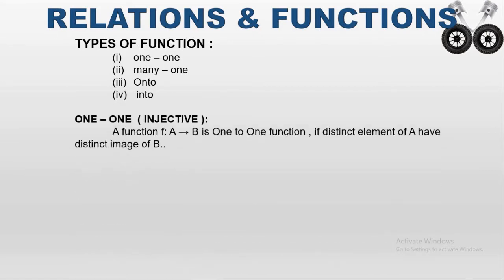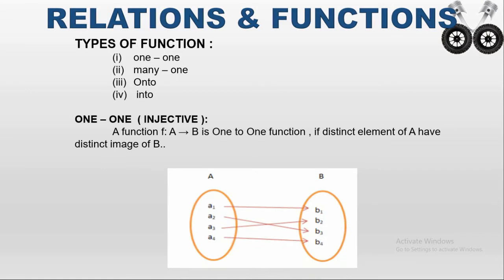First, we will see one-to-one functions. The other name for a one-to-one function is an injective function. If I want to say any function is a one-to-one function, then the elements presented in A must be distinct elements. Distinct element means each and every element in A should be different, and those distinct elements in A have distinct images in B. Distinct images means the elements in B are also different.